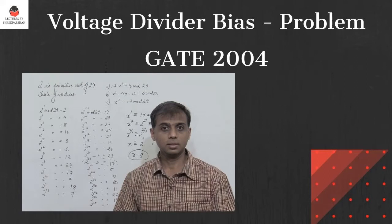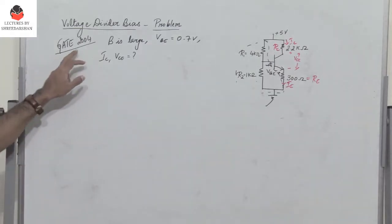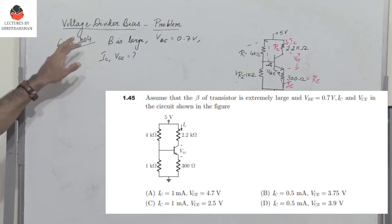Hello friends. We will solve a problem which has come in GATE 2004. This is a problem on voltage divider bias.